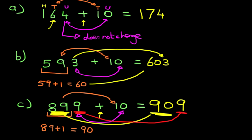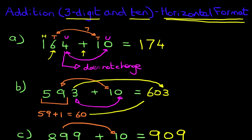So this is how we do addition of three digit numbers and the number 10 in the horizontal format. Have a practice. It's very, very simple.